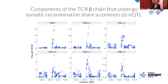Starting with co-localizing cis-eQTLs: these are components of the TCR beta chain — the T-cell receptor. This is a region of the genome that goes through somatic recombination in the immune system, where T-cells literally recombine their genomic segments to develop these receptors. We found that the lead e-SNP for all these components was the same in all cases, and confirmed these regions co-localize with each other.